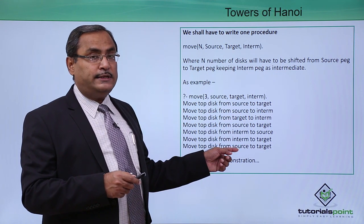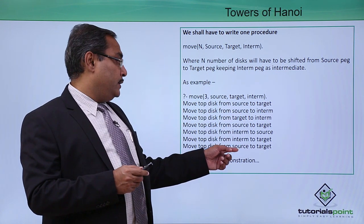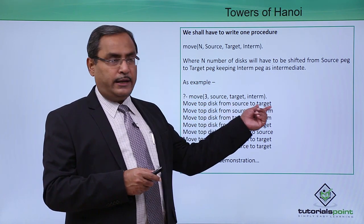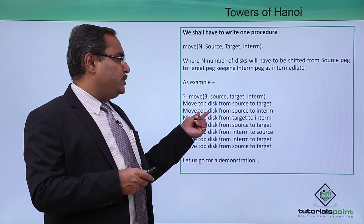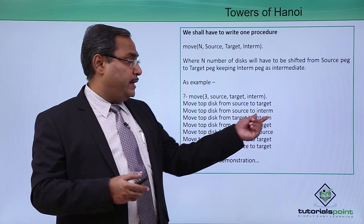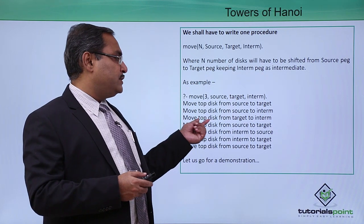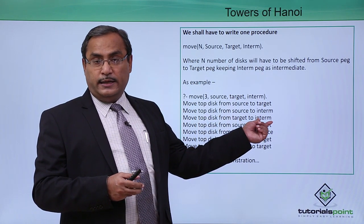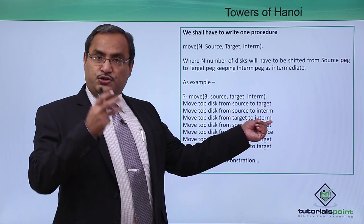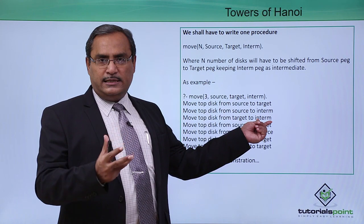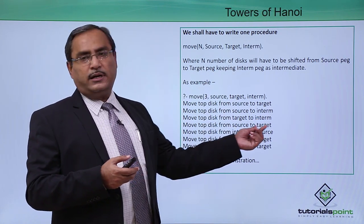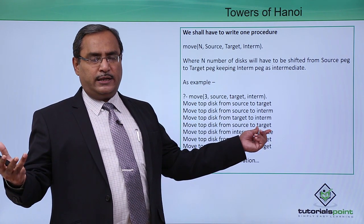The topmost disk, which is the smallest one, will be moved from the source to the target. Then the topmost disk from source to intermediate — the intermediate size disk will be moved to the intermediate peg. Then the topmost disk from target to intermediate — the smallest one moves there. The source peg is then left with only the largest disk, which will be moved from source to target.